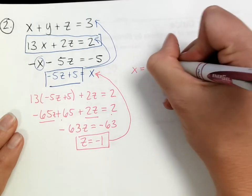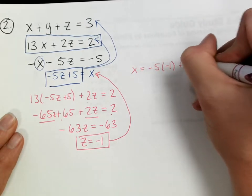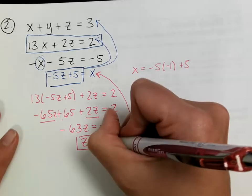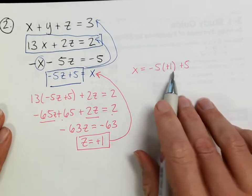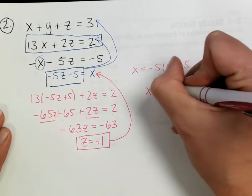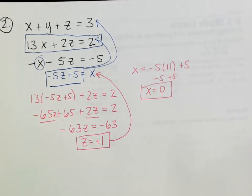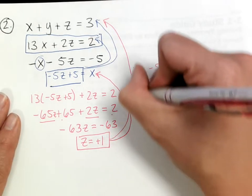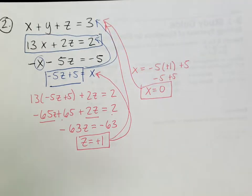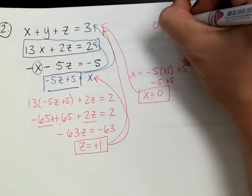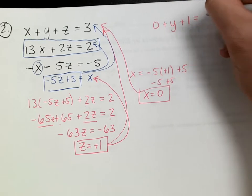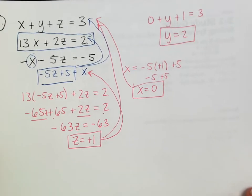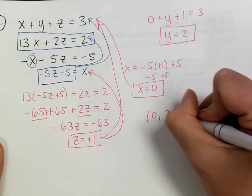Once I know z = negative 1, I substitute back: x = negative 5 times 1 plus 5, so x = 0. With x = 0 and z = 1, I plug both into the top equation x + y + z = 3 to get y = 2. Written as an ordered triple: (x, y, z) = (0, 2, 1).